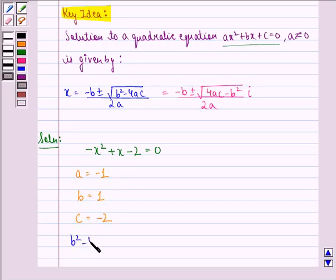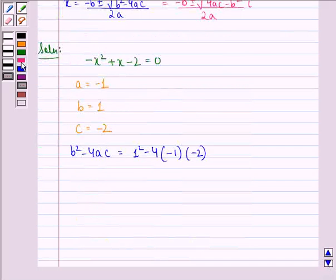We find b² - 4ac by simply substituting the value of a, b, and c. That gives us 1² - 4(-1)(-2), and that comes out to be -7.